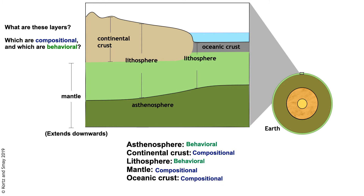One thing that sometimes comes up is what is the light green layer? We're saying it is both mantle and lithosphere — sort of two terms for it. It could be considered the lithospheric mantle or the mantle lithosphere. It's not strictly behavioral or compositional — it's a combination. Hopefully this is a good review and gets you thinking about the brittle layer of earth, the lithosphere, because that is what relates to tectonic plates next.